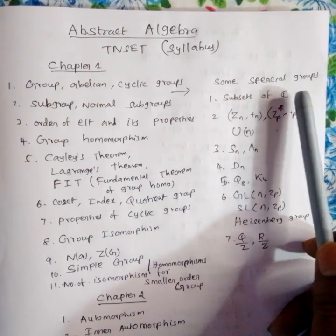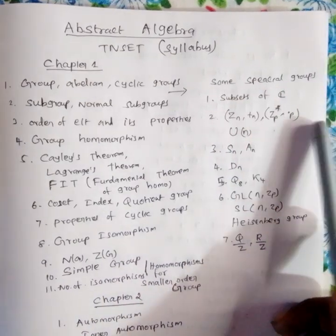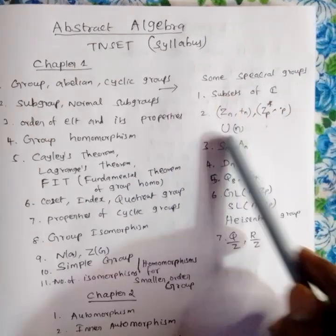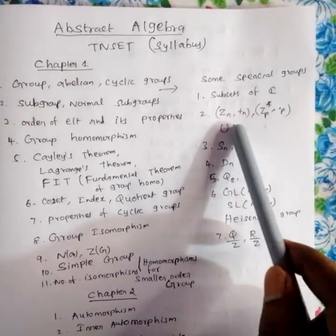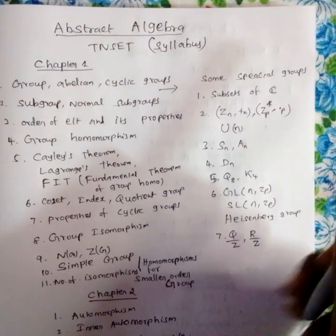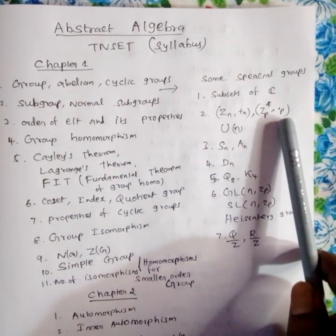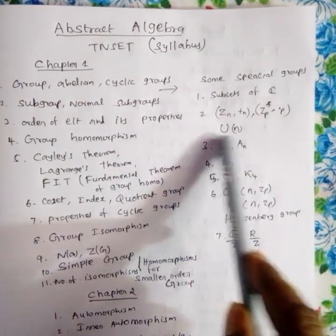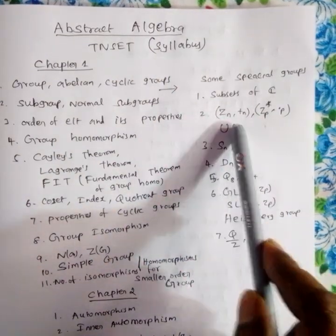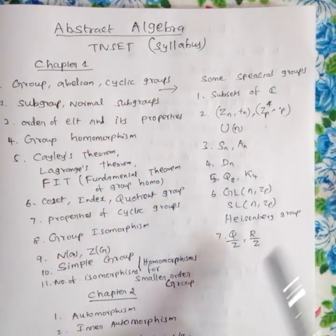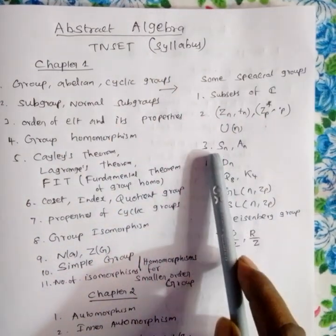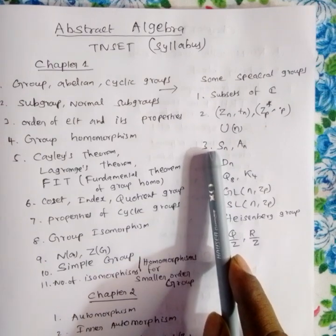We will cover the sets Q, R, C — the rationals, reals, and complex numbers. Addition model Z mod N, multiplication model Z mod P, and U(N) — the set of all units in Z mod N.